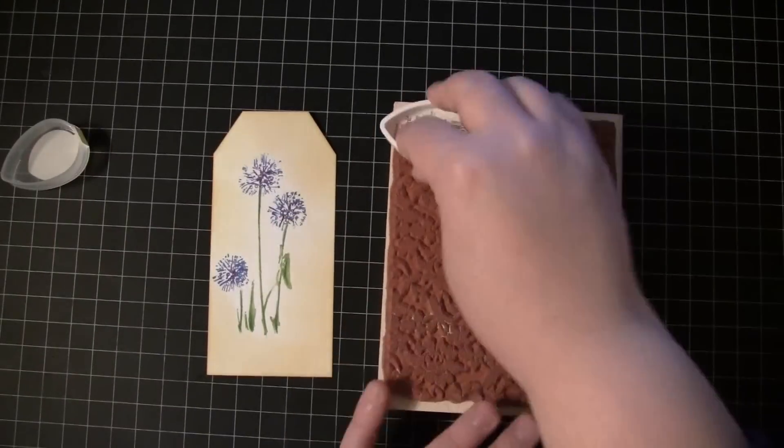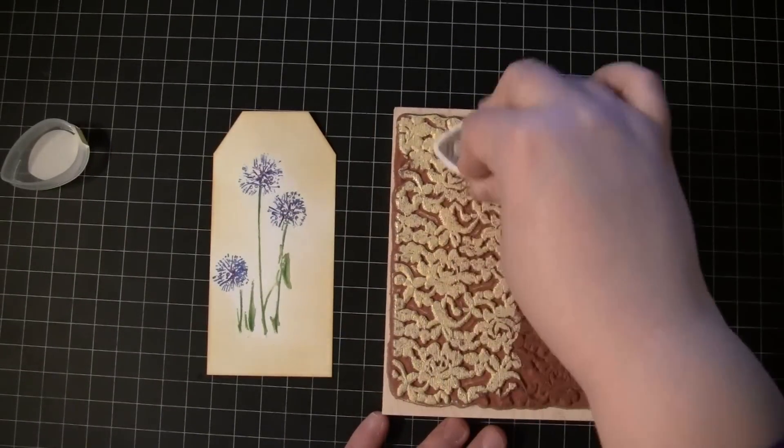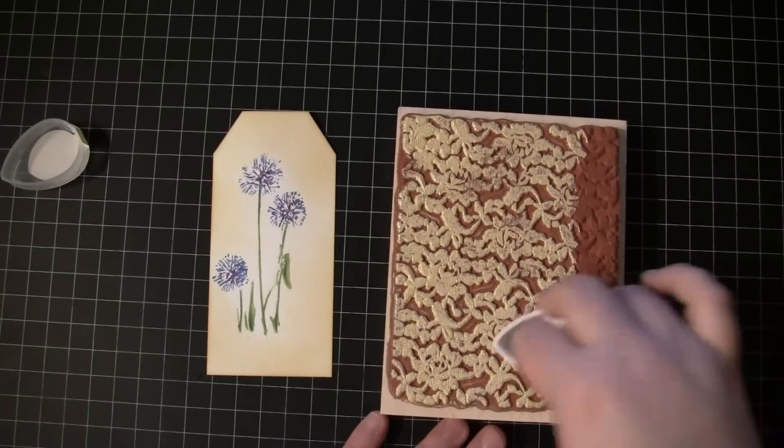Now again, this background stamp by Penny Black has a lot of solid areas, so I'm using the Versamagic ink again. This is in the color of Thatched Straw.